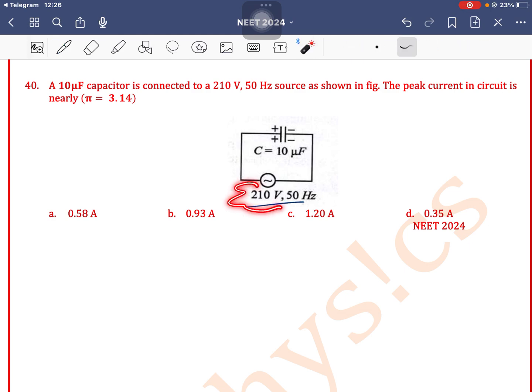As only voltage in the form of 210 and 50 hertz is given, this will represent root mean square voltage which is equal to 210.